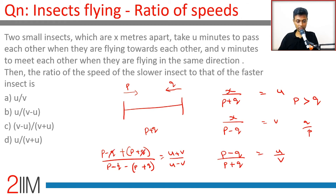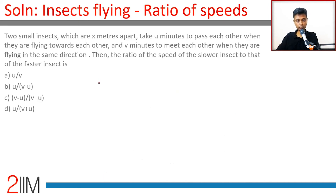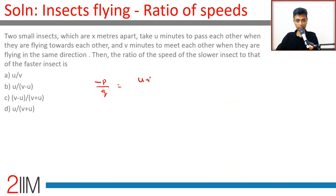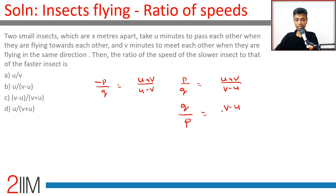After cancellation, we get two p by minus two q, so minus p by q equals u plus v by u minus v. Therefore p by q equals u plus v by v minus u. We want q by p, which is v minus u by v plus u.